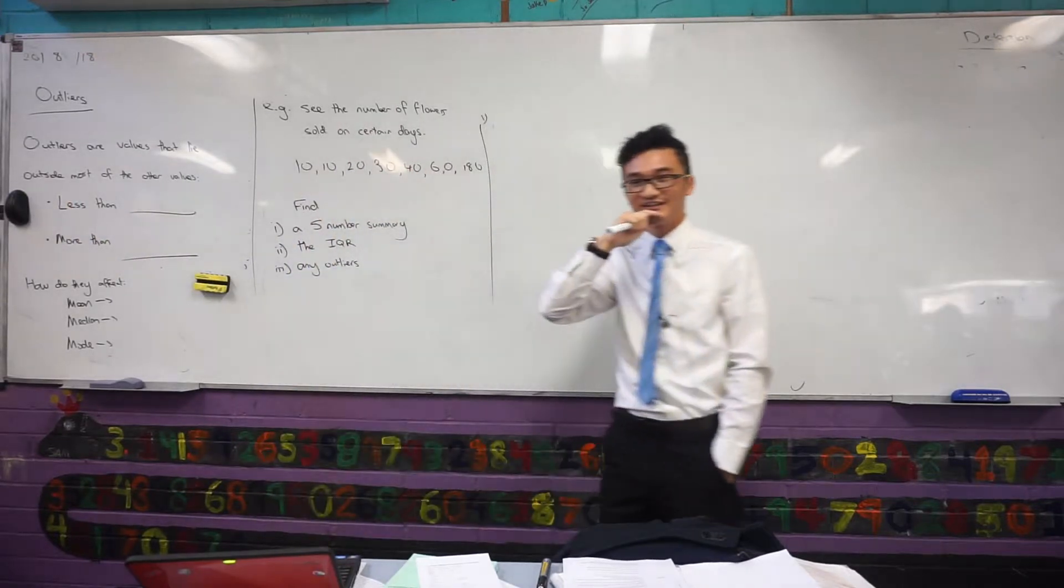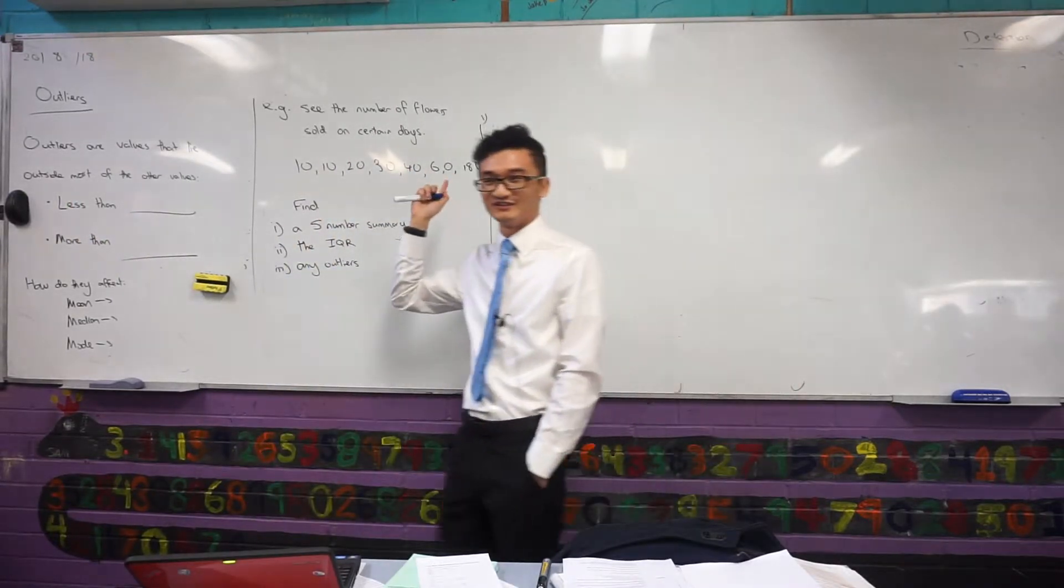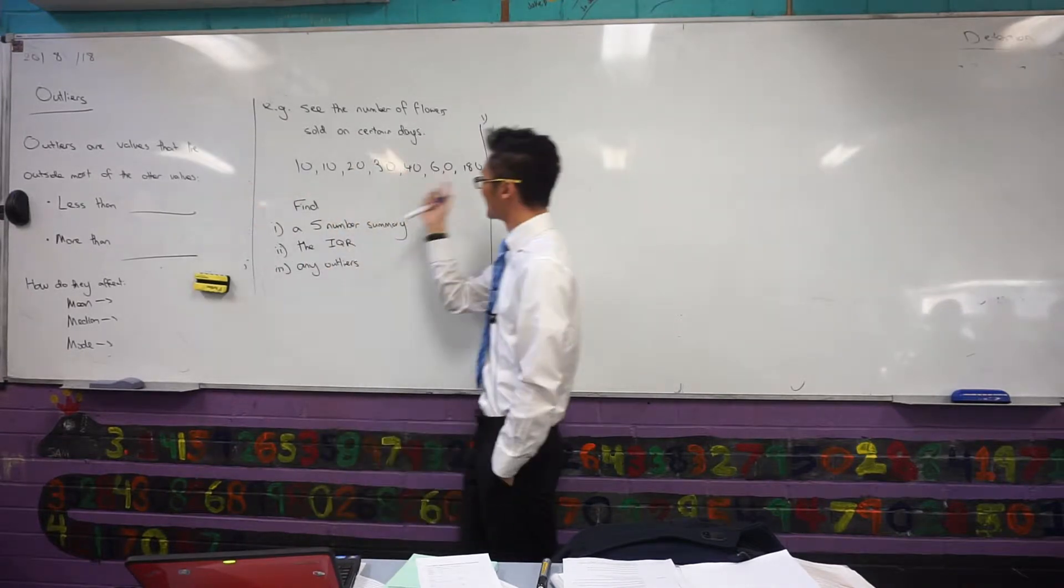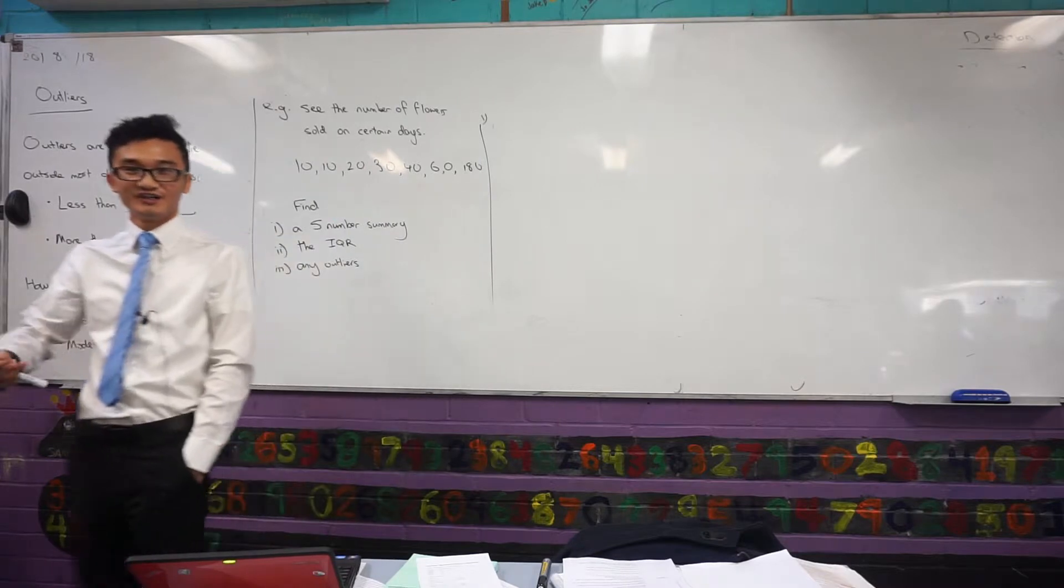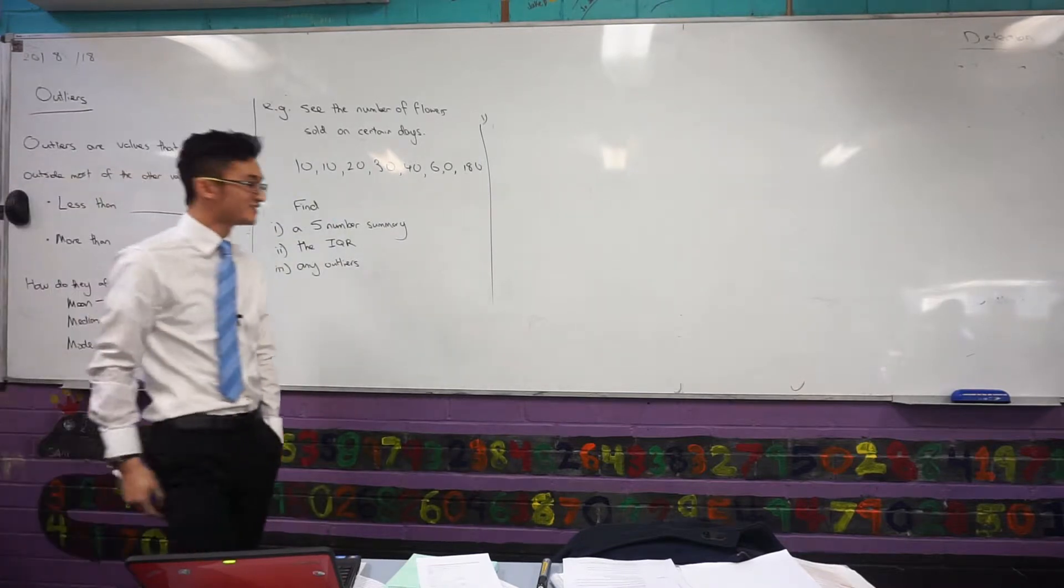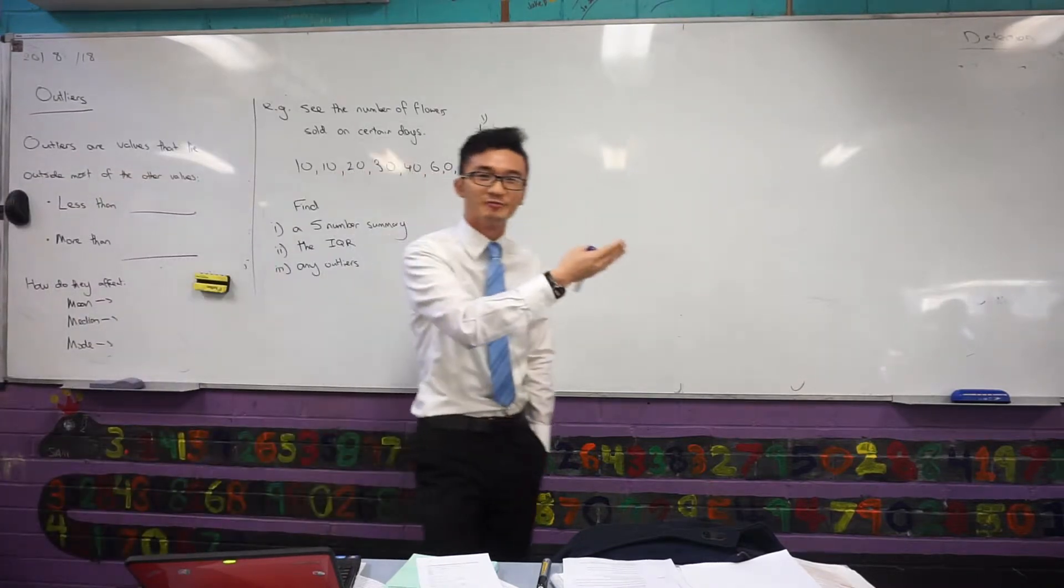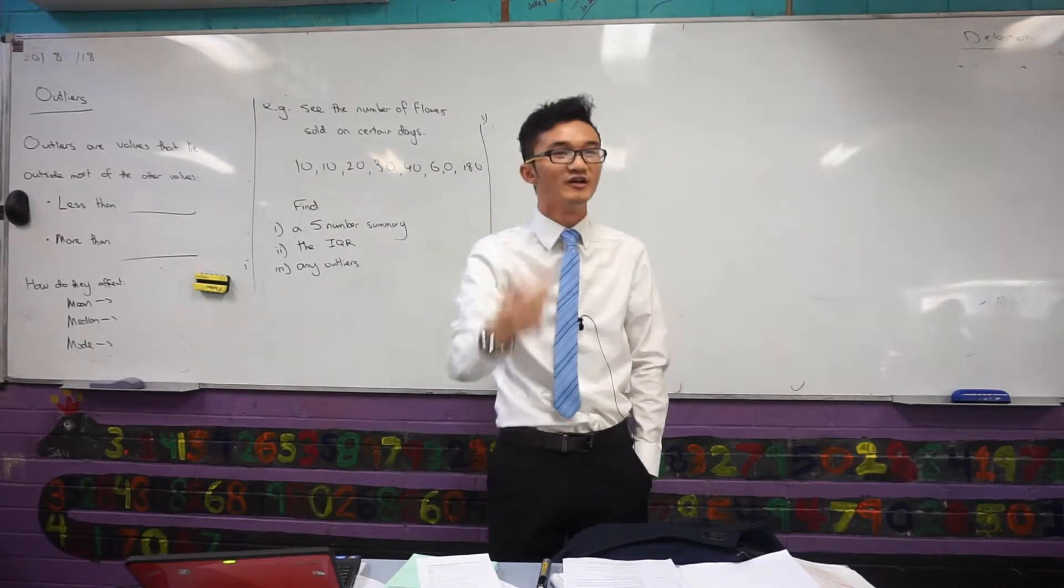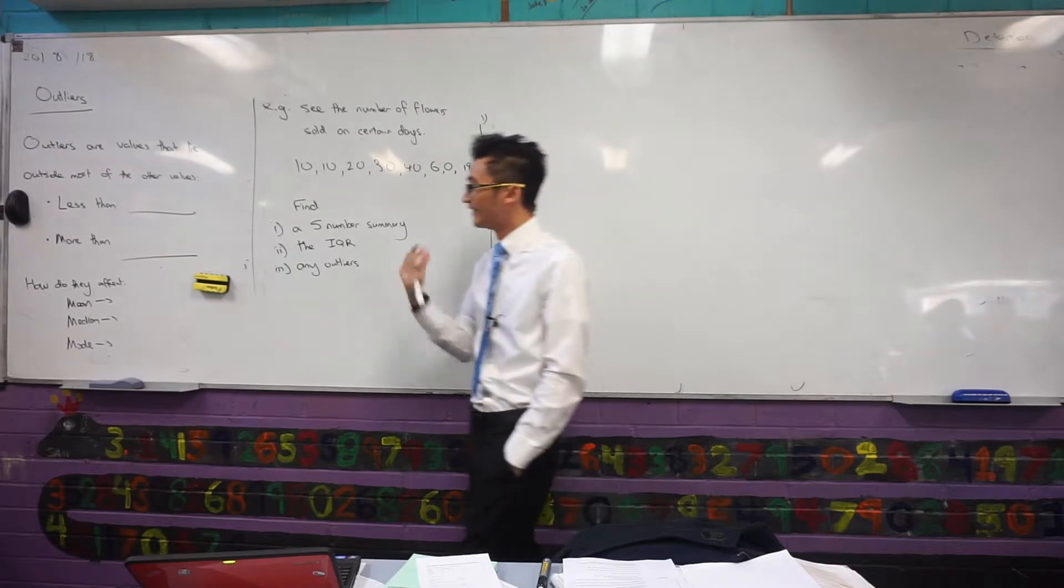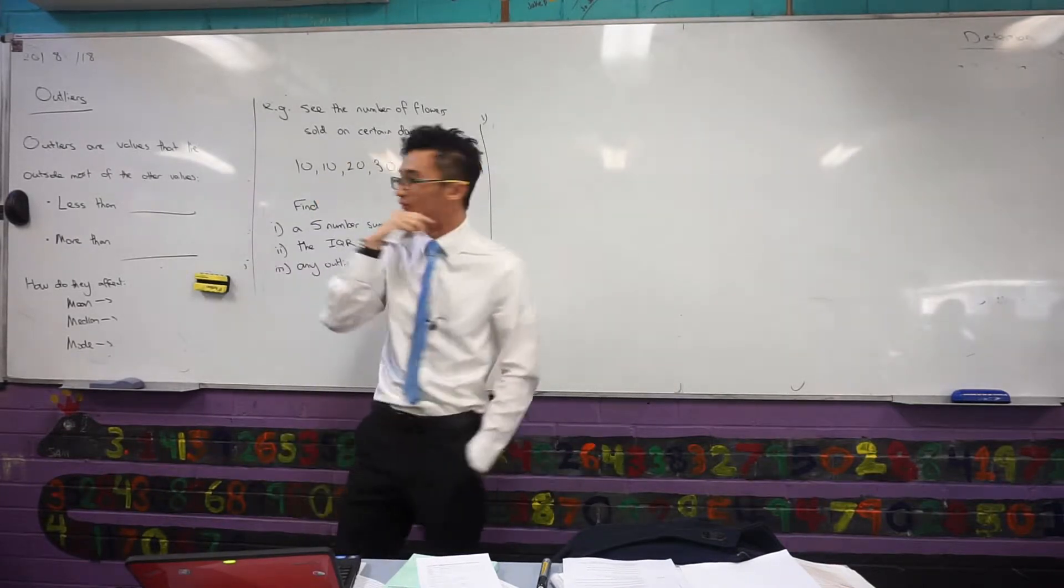If you looked at this data set here, which one looks like an outlier to you? 180, okay, because it's much bigger than the rest of these. But we want a strict definition to actually describe outliers because it's not enough to say 180 looks really big or 10 looks kind of small. How do we actually know? We need a mathematical definition.